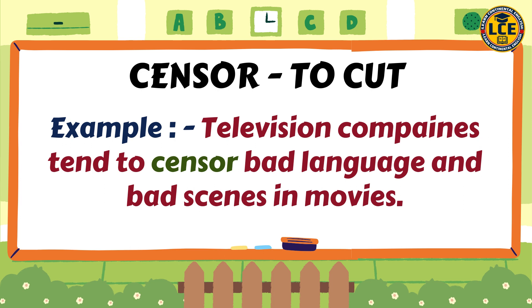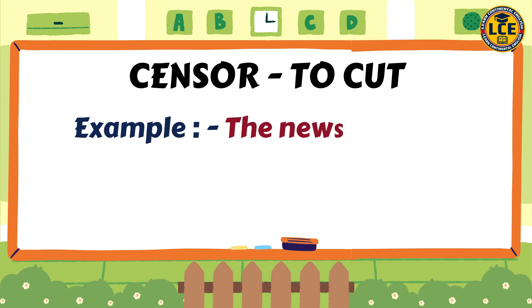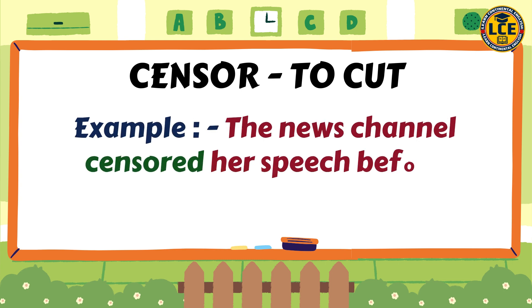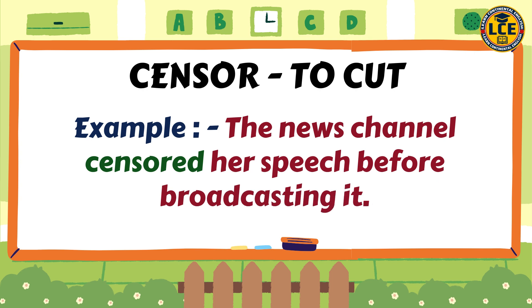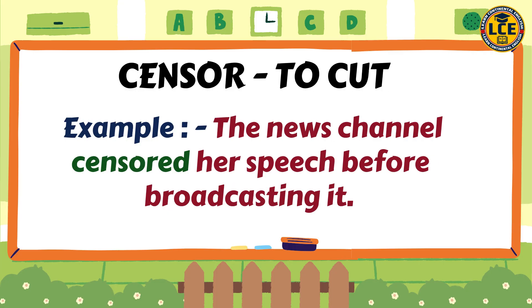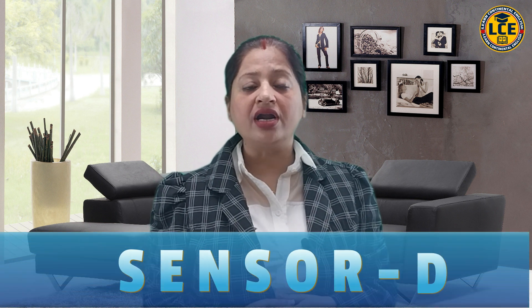Yaani kuch television companies koi bhi program dikhaane se pehle, agar usme koi kharab language ya kharab scene use hua hai, to usko cut kar diya jata hai. Ek aur example: 'The news channel censored her speech before broadcasting it.' Kuch news channels aisa karte hain ki agar aap against the government ya against the laws kuch bol rahe ho, to news channel aapki speech ko censor kar deti hai. So c-e-n-s-o-r ka matlab hua kaat chhaat karna.